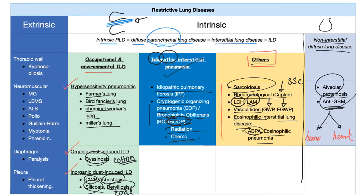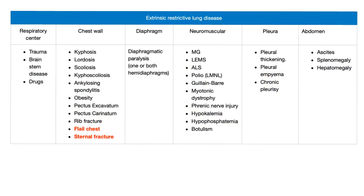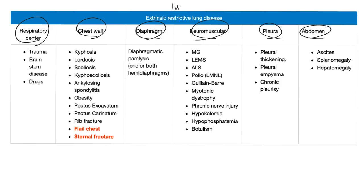Please spend five minutes to memorize every word in this table, otherwise it's going to be brutal in the following videos. Now let's start with the easier one: extrinsic restrictive lung disease. The problem could be in the respiratory center, chest wall, diaphragm, neuromuscular system, pleura, or abdomen — anything except the lung. If it's in the lung, we call it intrinsic.